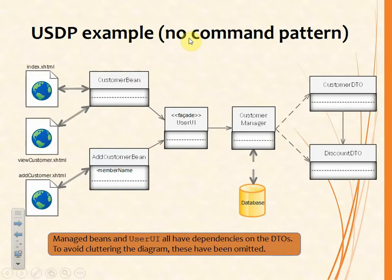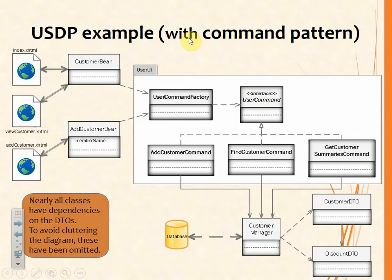So it might be that when using a facade you have to add in an extra class. When it comes to the command pattern, when you decide a command pattern would be very useful here, you're going to have to add in quite a bit. You're going to add in a whole subsystem that is all about getting commands. You'll need a command factory, you'll need the interface for command, and you'll need as many concrete command classes as you have got commands — generally one concrete command class per use case.